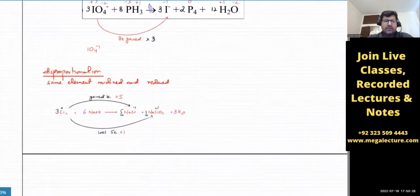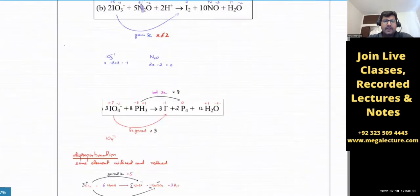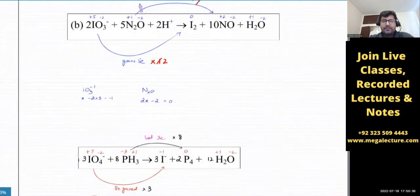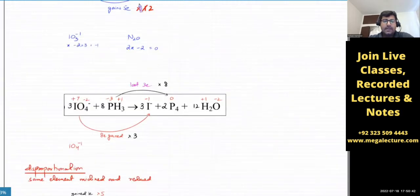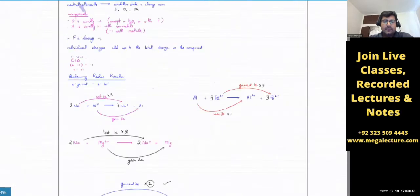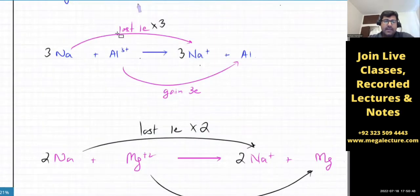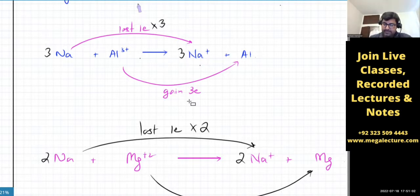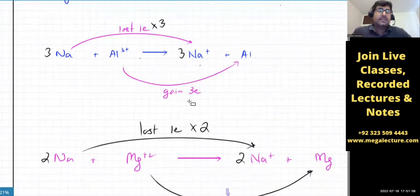You had oxidation states and the number of electrons gained and lost have to be equal in a chemical reaction. The electrons gained and lost in a redox equation — you have to balance it. For example, if you have Na losing one electron and Al gaining three electrons, then Na has to be multiplied by three. So this was all about AS electrochemistry.